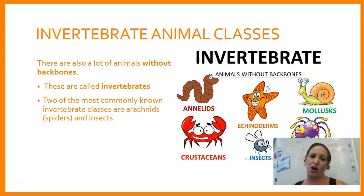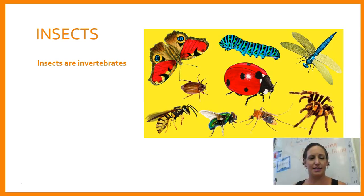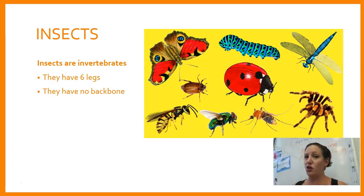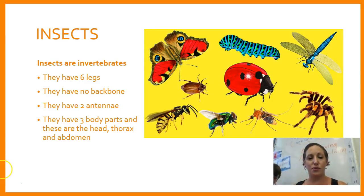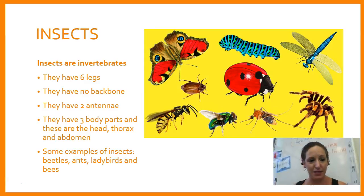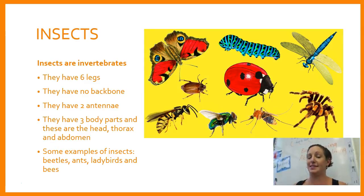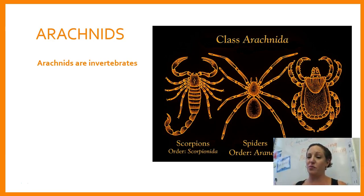The two most commonly known invertebrate classes are arachnids and insects. Insects are invertebrates, which means they have six legs, no backbone, two antennae, and three body parts: the head, thorax, and abdomen. Some examples of insects are beetles, ants, ladybirds, and bees.